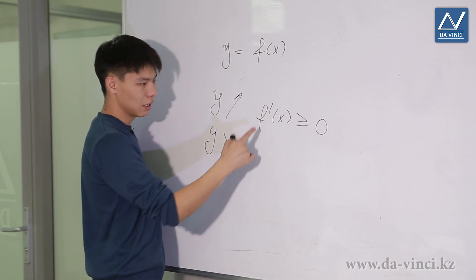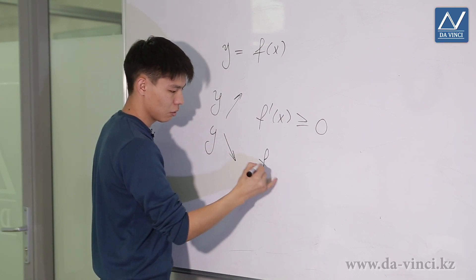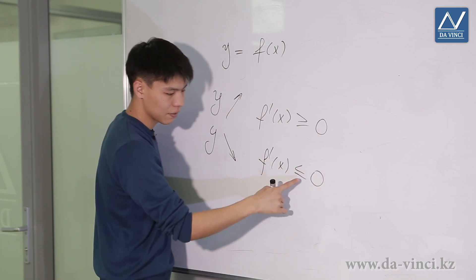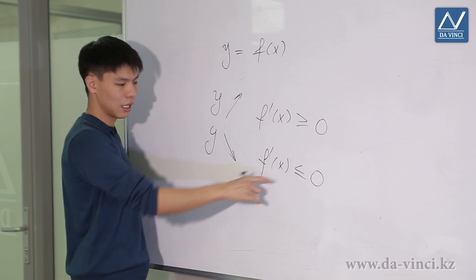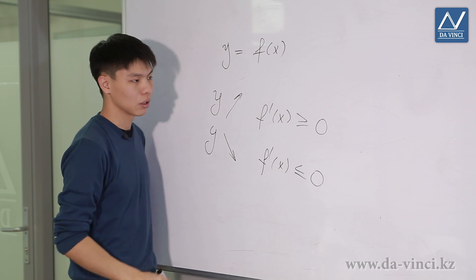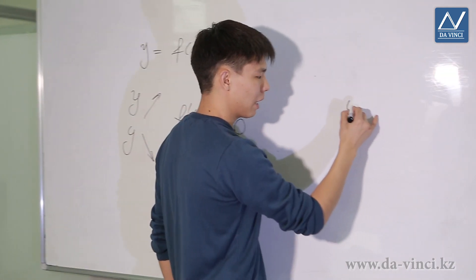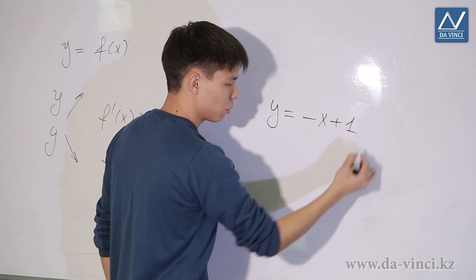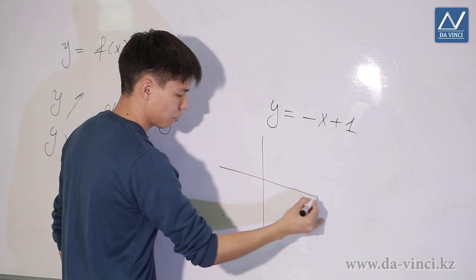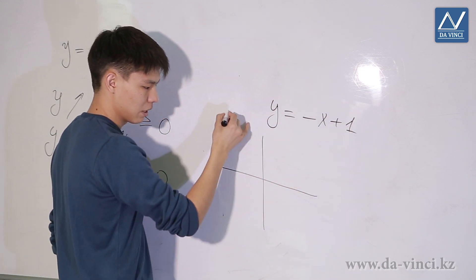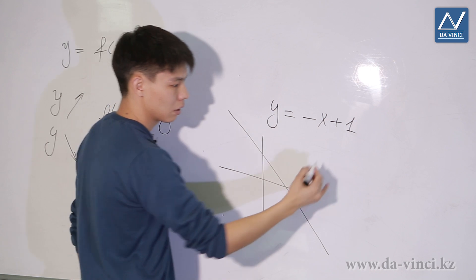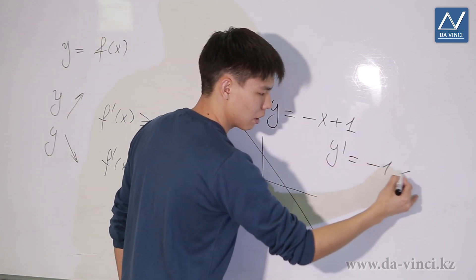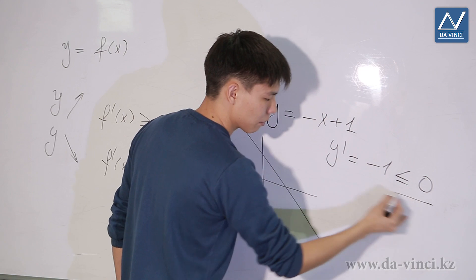Similarly, the function will decrease if the value of the derivative is less than or equal to 0. And again, equality to 0 can only be achieved at individual points, not on the interval. For example, the line y = -x + 1 — its graph looks like this, it decreases. Its derivative is -1, and it is always less than or equal to 0.